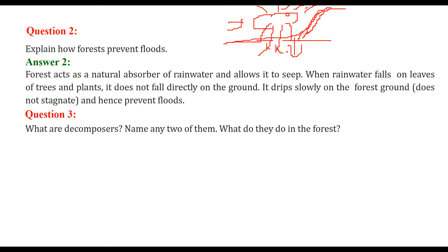When there is no tree, water flows directly, taking away the important upper layer of soil. But when a tree is there, it stops the water flow. Prevention of floods is a major task of trees whose roots bind the soil.